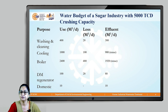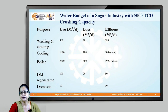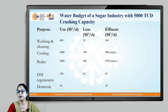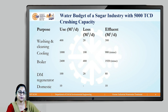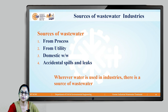Without any extensive treatment — just by bringing down the temperature — you can reuse this wastewater. That means nearly 3000 cubic meters per day of wastewater is ready for reuse and will not be disposed of. This is a huge amount of water saved, which demonstrates the significance of the water budget.